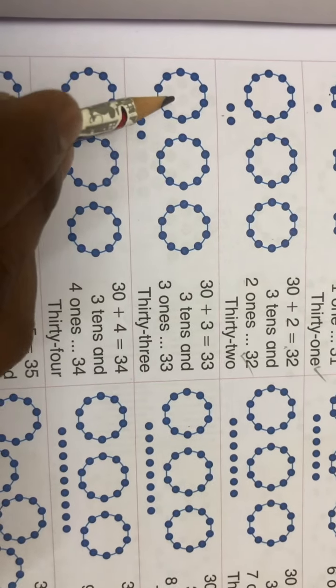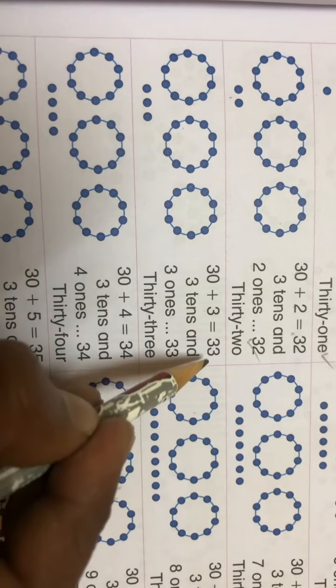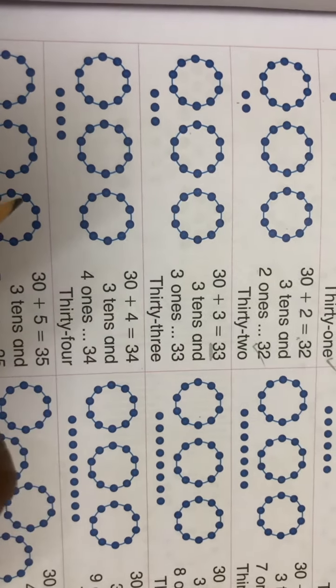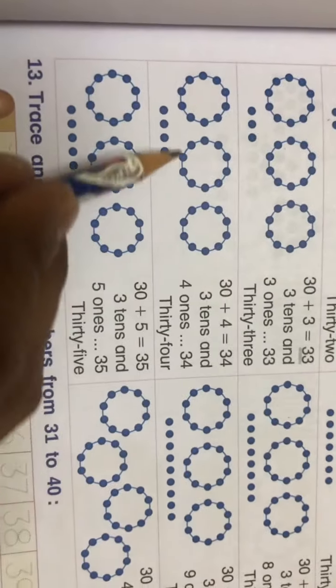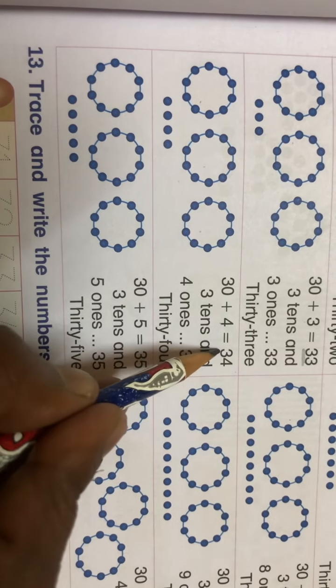Same way, if there are three tenths and three ones, it makes 33. Then if there are three tenths and four ones, it makes 34.